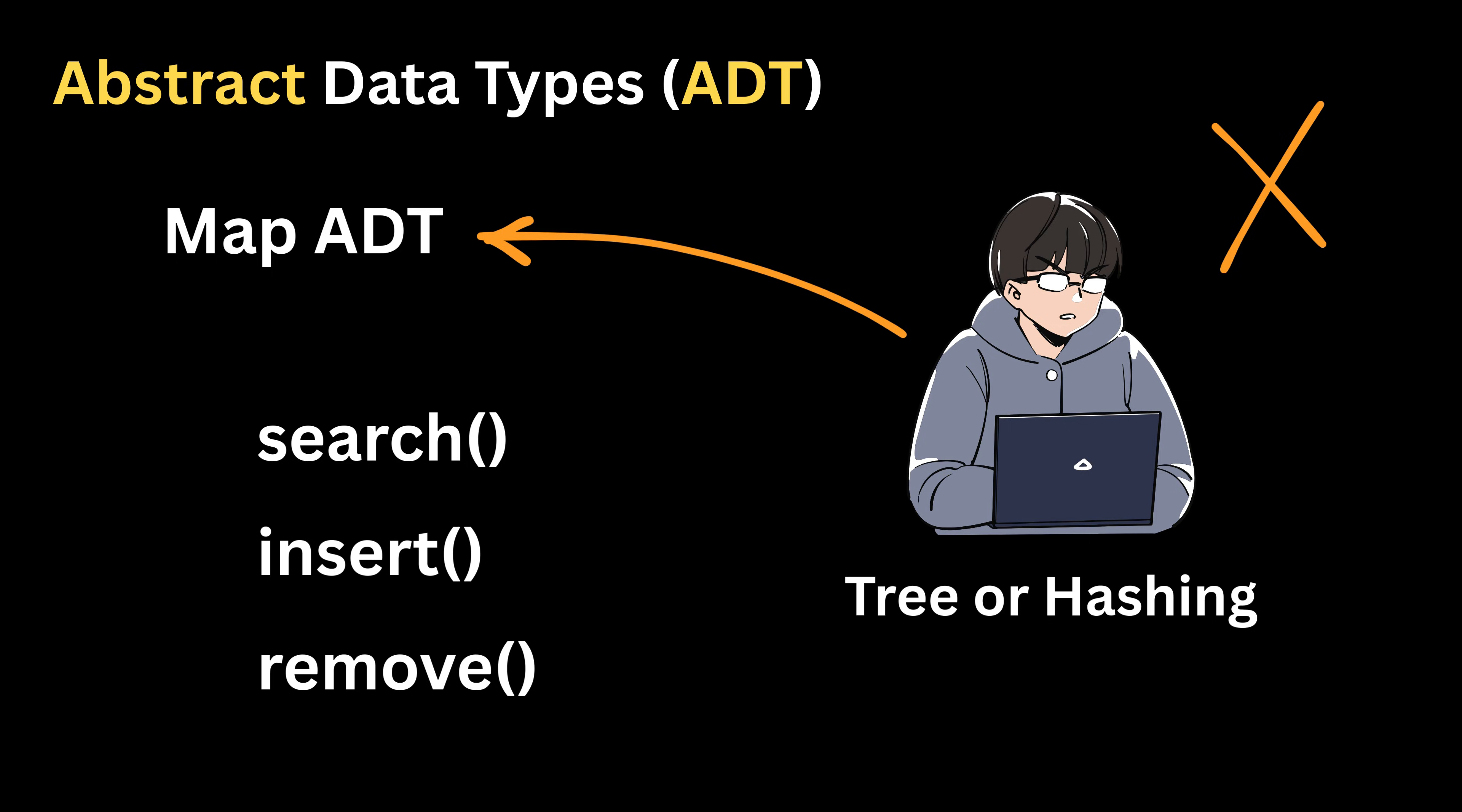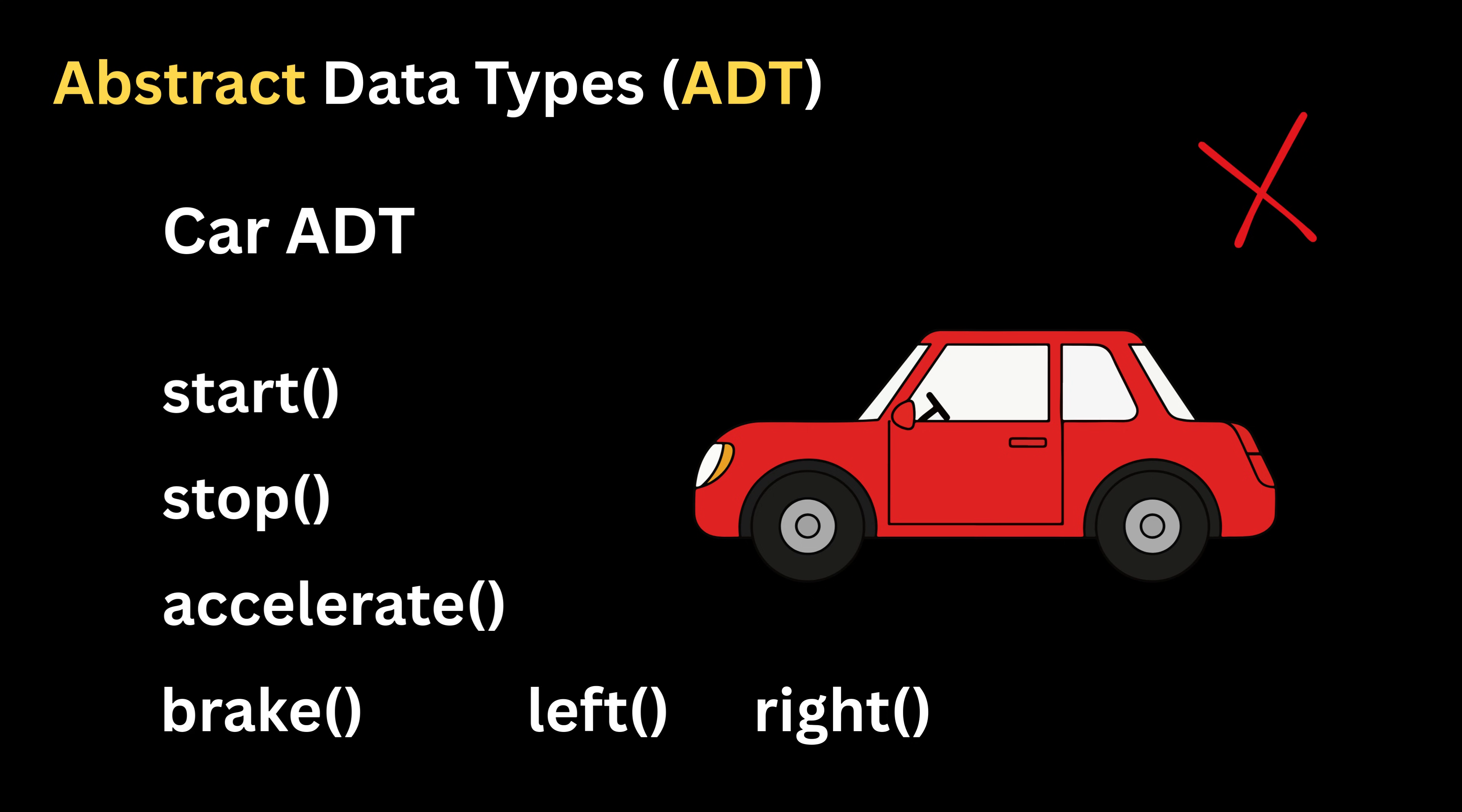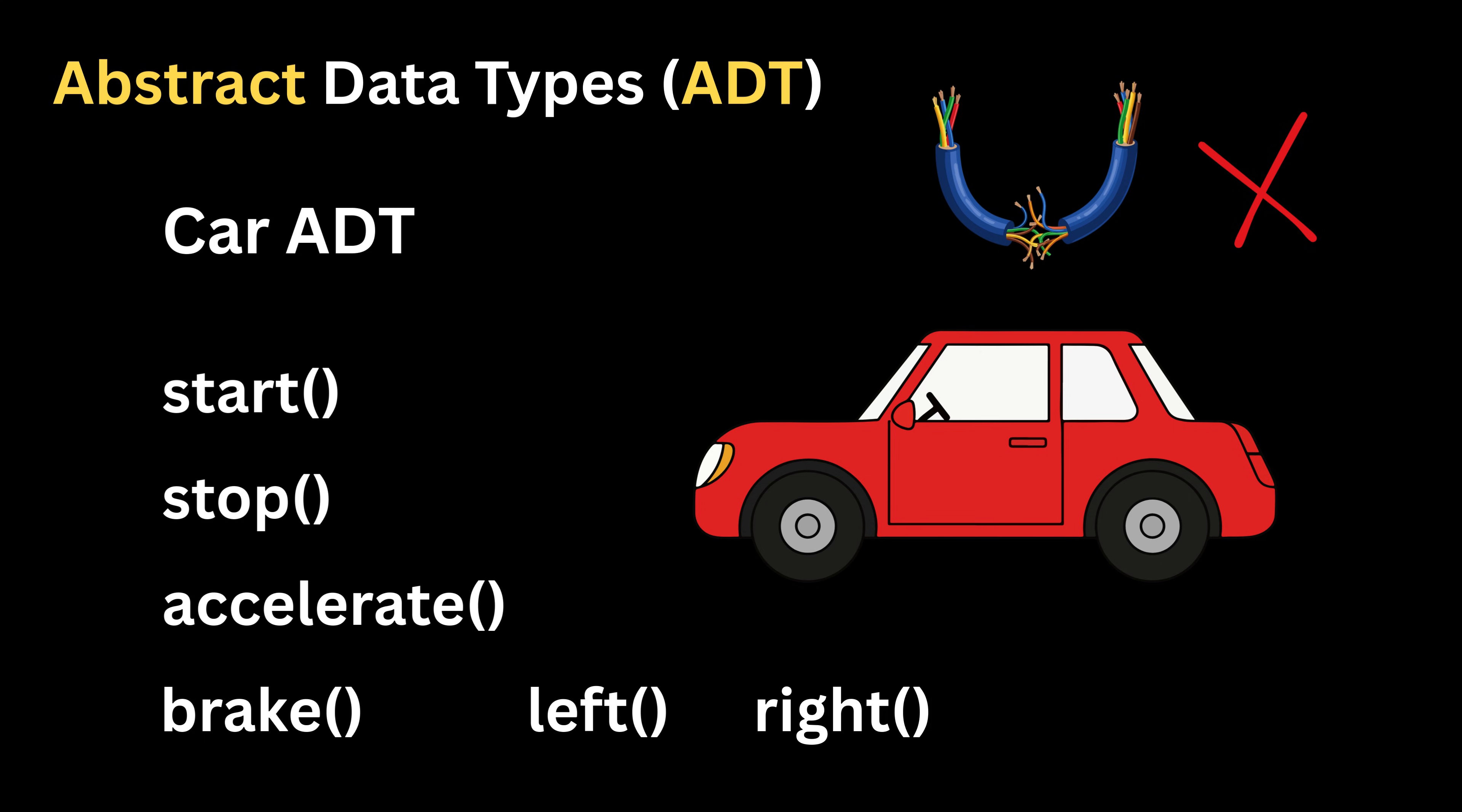To tie this with a real world example, imagine a car ADT. When you think of a car, you already know its allowed actions: start, stop, accelerate, brake, turn left, and turn right. These actions define how the car behaves from the outside, but you do not need to know whether the engine is petrol, diesel, or electric, or what type of gear mechanism the car uses, or what materials are used to build it. You also do not care whether the wiring is arranged in one way or another.